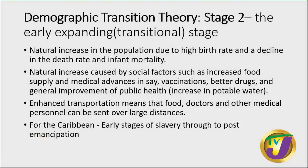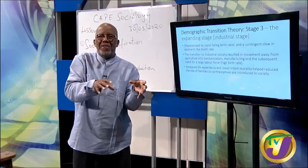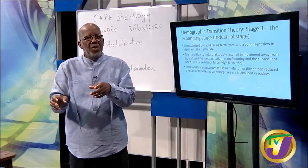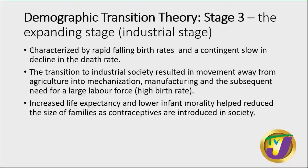Stage two: natural increase in population due to high birth rate, but we start to see a decline in the death rate and infant mortality. We see improvement in medical development, technology, vaccination, and enhanced transportation — meaning food, doctors, and medical personnel could be sent over large distances. Stage three is characterised by a rapidly falling birth rate and a continuing slow decline in the death rate. As we get more industrialised, we move from farming to manufacturing, which required fewer people, then to an electronic society, which requires even fewer. Increased life expectancy and lower infant mortality also occur. Cultural factors affect birth rates as society became more religiously cosmopolitan.